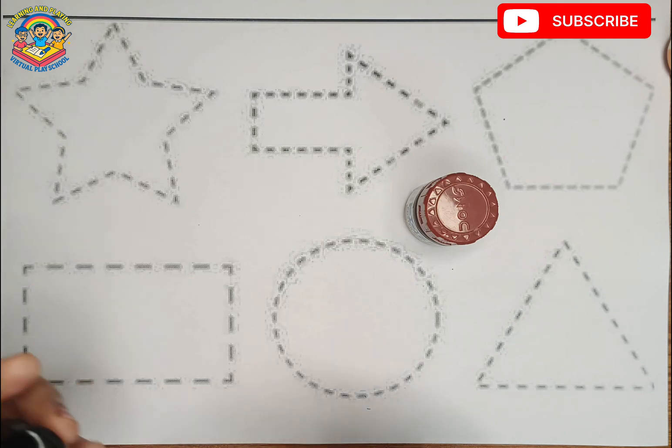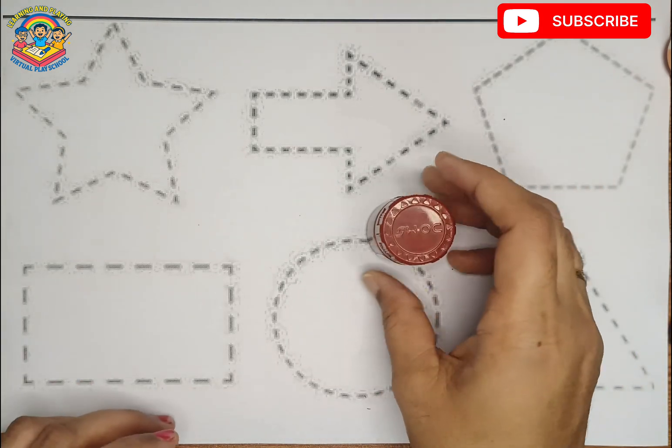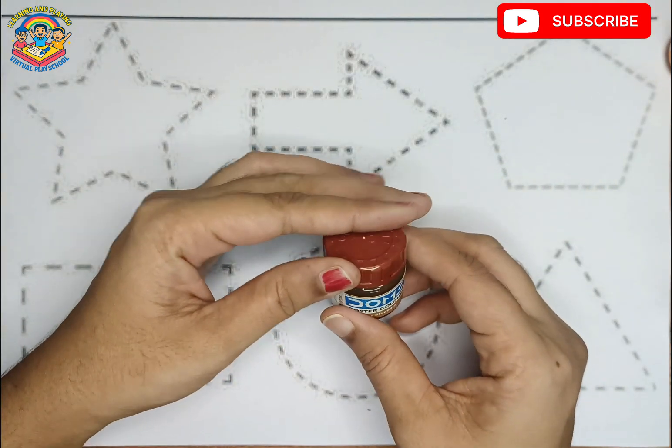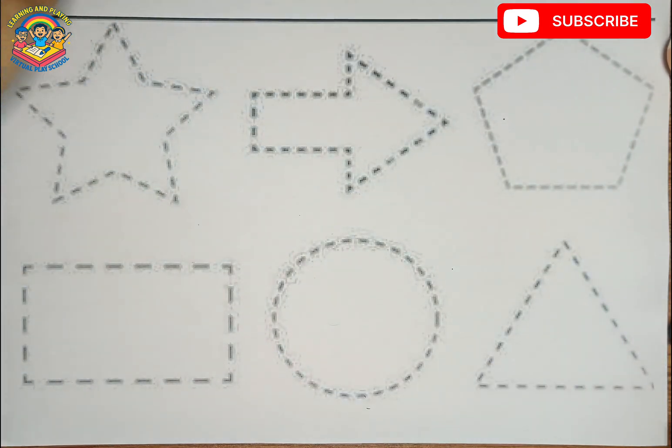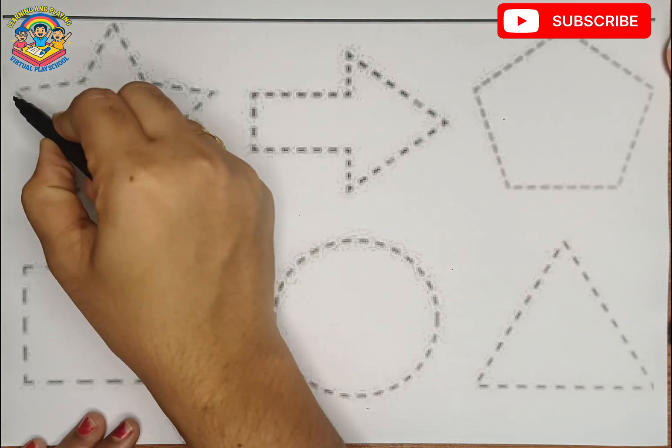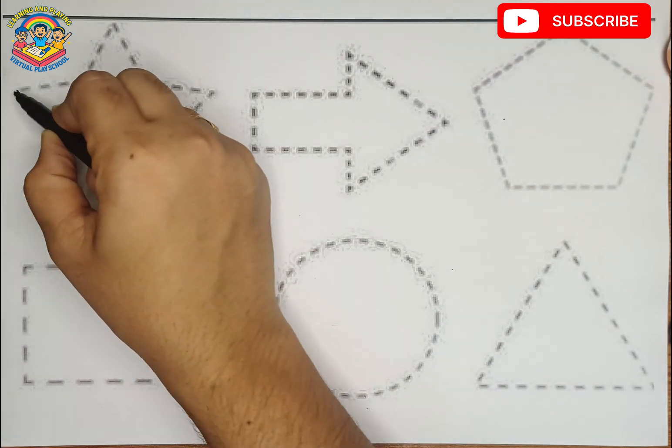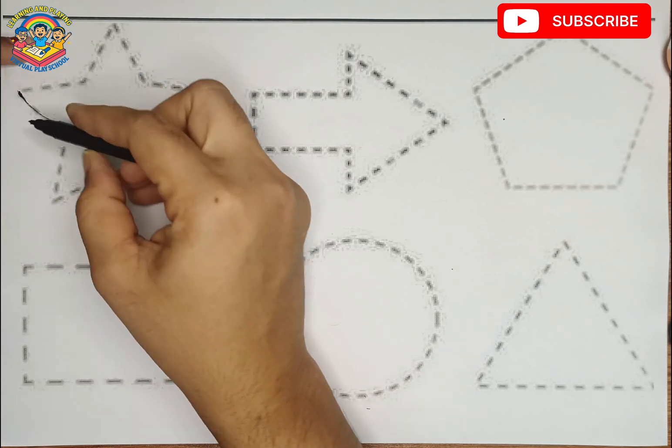Brown color. Which color kids? Brown color. Let's start the video. Star. What is this kids?